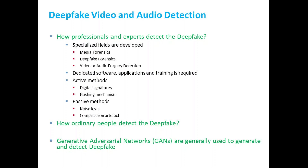For this, you can use two types of professional methods. One is active methods, in which you ensure the integrity of the video from the start using digital signatures and hashing mechanisms. The other is passive methods, in which, when you already have a video, you can determine whether there are modifications, alterations, or deepfake generation by checking device-level artifacts or compression artifacts, and then assess the integrity of the video.